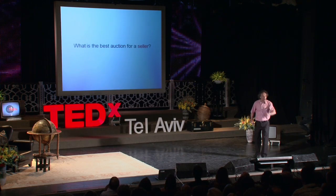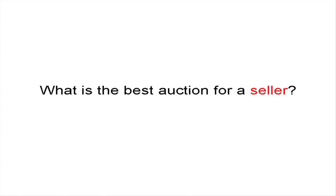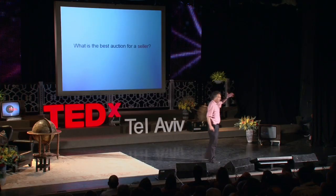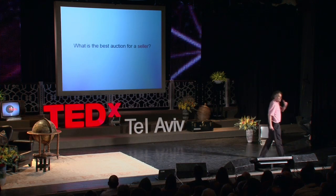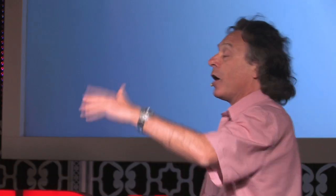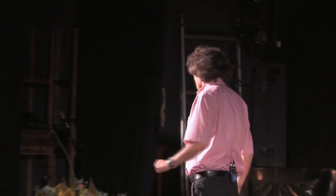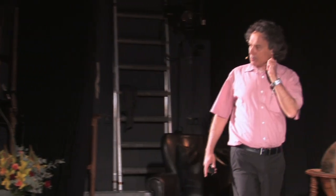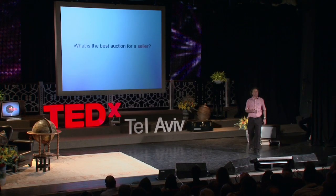If you want to sell an object, the best auction under general circumstances is the English auction — or equivalently, the Japanese or online auction. They are all equivalent. So if you want to sell something, selling on eBay will guarantee you, on expectation, the highest revenue you can extract. If you are a bidder on eBay, bid your own valuation. I want to mention some caveats to that, which I'll speak to in a moment.